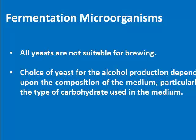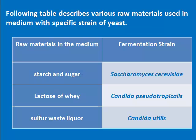As fermentation microorganisms, not all yeasts are suitable. The choice of yeast for alcohol production depends upon the composition of the medium, particularly the type of carbohydrate used. A table shows various raw materials used in the medium with the specific strain of yeast. Whenever starch and sugar are utilized as raw material, Saccharomyces cerevisiae will be utilized as the fermentation strain. In the presence of lactose of whey, Candida pseudotropicalis is utilized, and whenever sulfite waste liquor is there as a raw material, Candida utilis is useful.